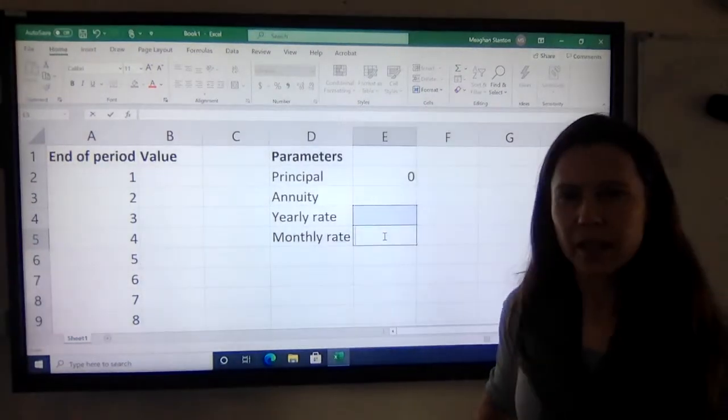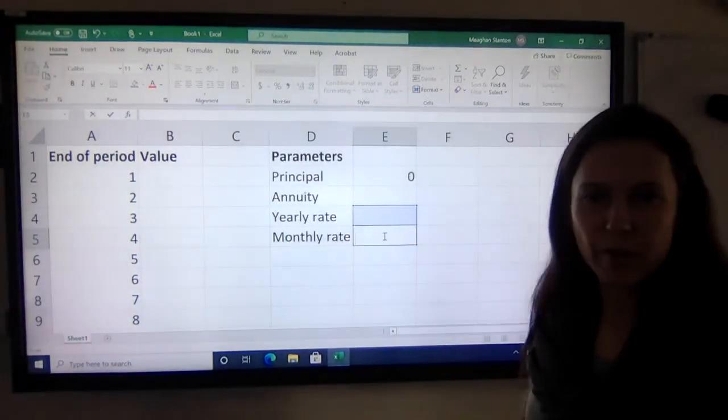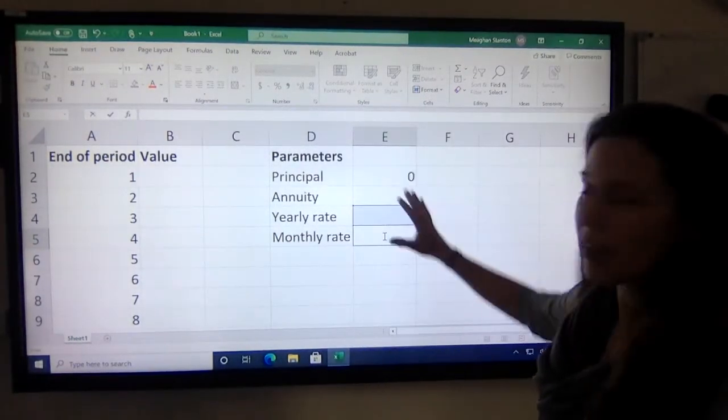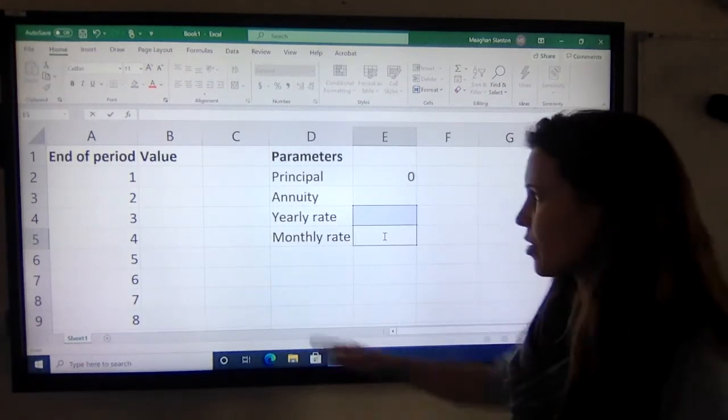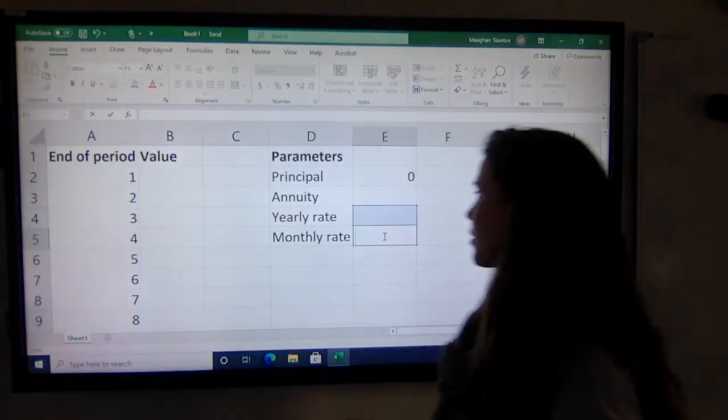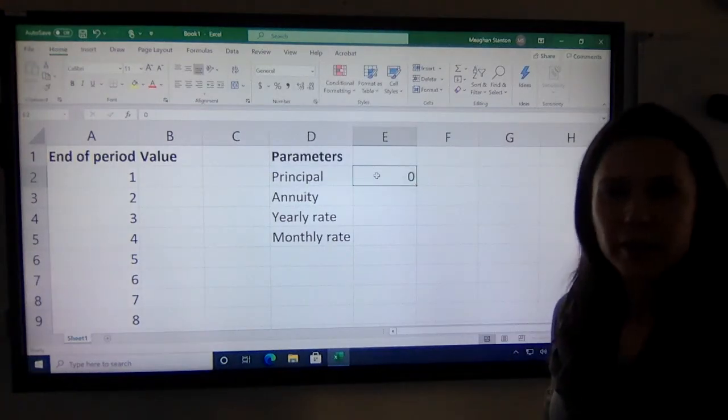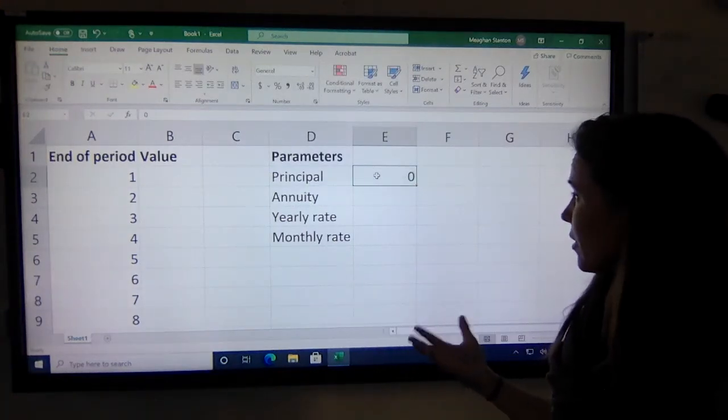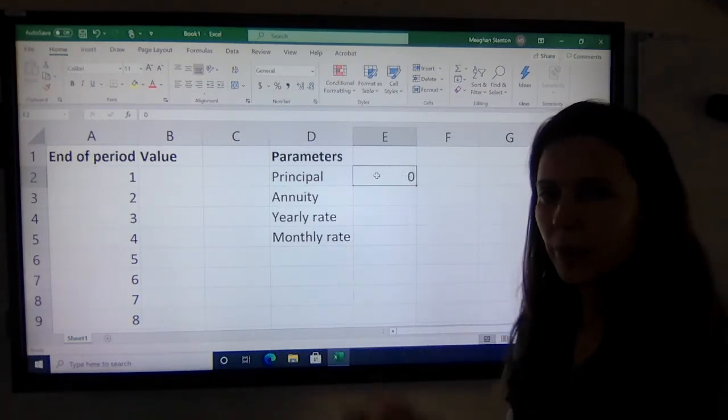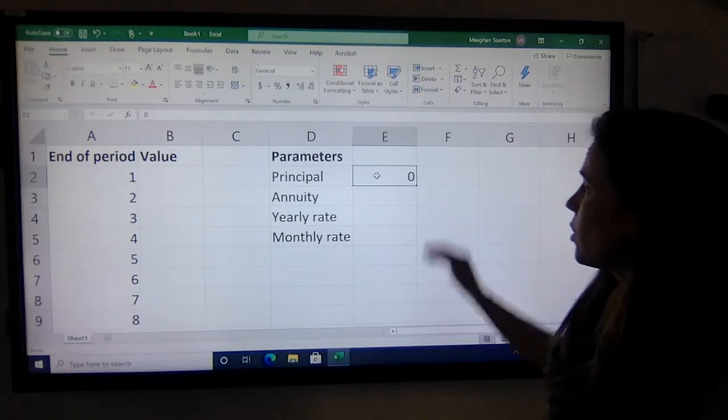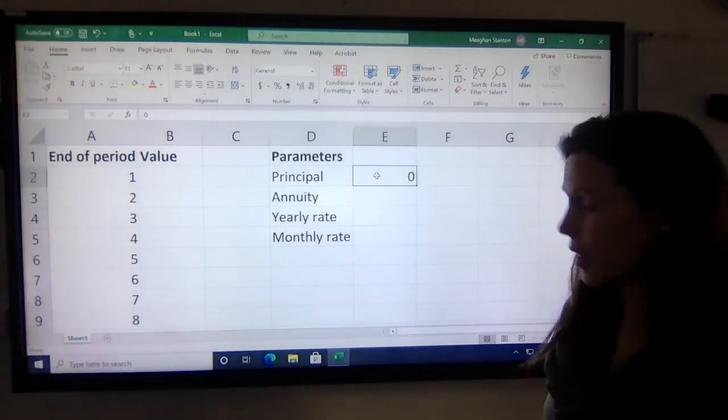Over on the side here I have my parameters for the question. Laying them out like this allows me to change them for subsequent questions and still quickly calculate my values. The principal is the amount in your account at the start. For this question, we'll do the same example as we did with Jesse's superannuation. We'll say that in the beginning she had no money in the account.